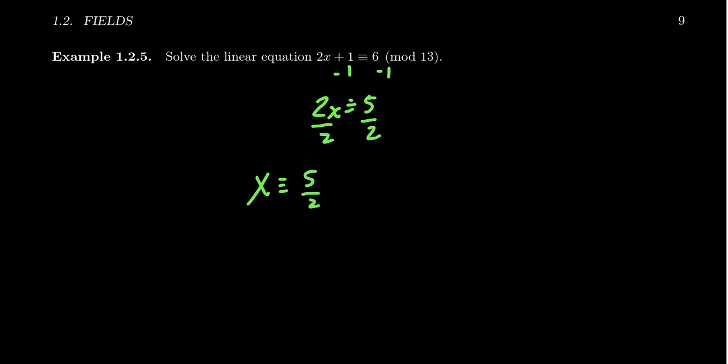2 doesn't divide into 5, so instead we're going to replace 5 with 5 plus 13. 5 plus 13 of course is 18. 2 does go into 18, in which case we get 9 as our final answer.